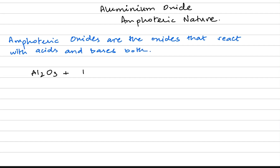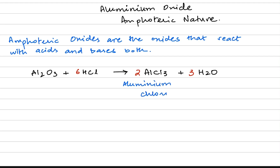Aluminium oxide reacts with hydrochloric acid to produce aluminium chloride and water. Here aluminium oxide is behaving like a base because it is neutralizing the hydrochloric acid. When we balance this equation we get two moles of aluminium chloride. Aluminium chloride is a salt, and aluminium oxide was behaving like a base here, which is typical of many metal oxides.